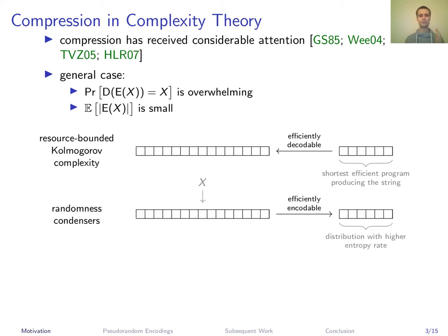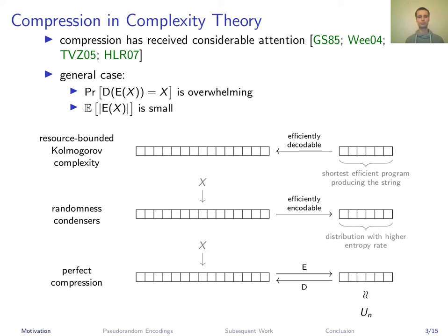On the other hand, we have randomness condensers — maps that map a distribution into a distribution with a higher entropy rate, and hence can be seen as an efficient compression algorithm where decompression is not necessarily efficiently possible. Perfect compression encodes a distribution into the uniform distribution, because otherwise one could have compressed further. Perfect compression allows efficient encoding and efficient decoding, basically unifying the core properties of the above two notions.